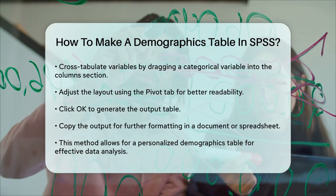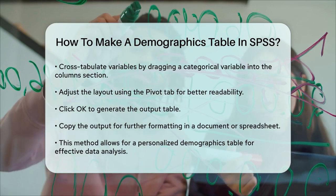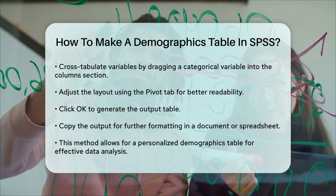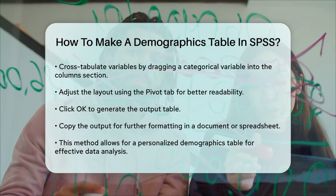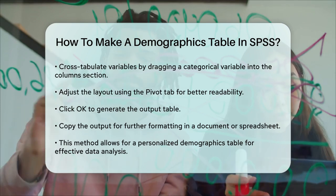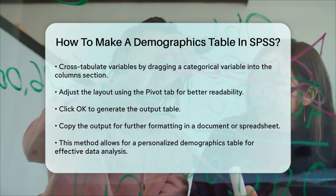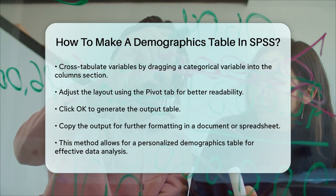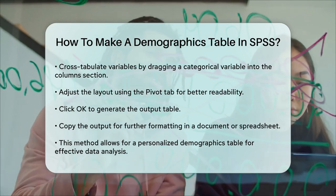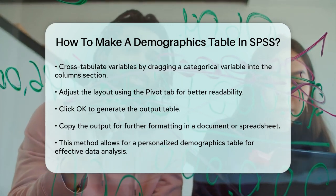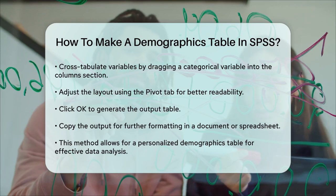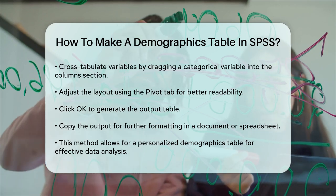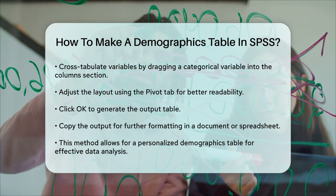Once you've set up your table, click OK to generate the output. You can then copy this output and paste it into a document or spreadsheet for further formatting. This method allows you to combine multiple demographic variables into one personalized table, making it easier to analyze and present your data effectively.